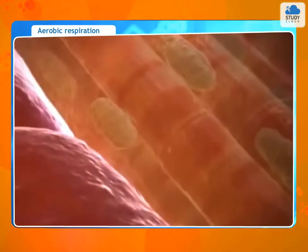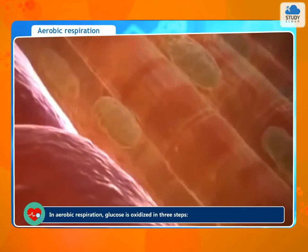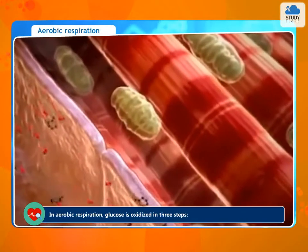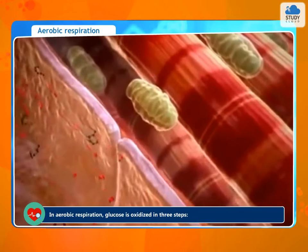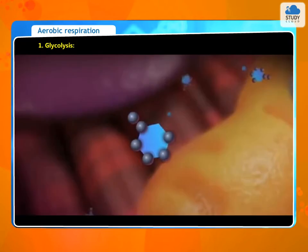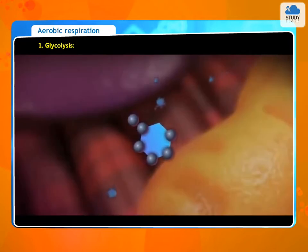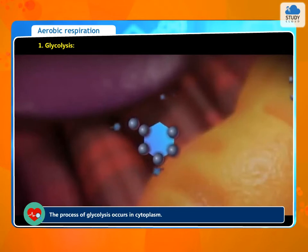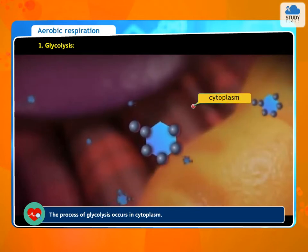Aerobic respiration. In aerobic respiration, glucose is oxidized in three steps. Step 1: Glycolysis. The process of glycolysis occurs in the cytoplasm.